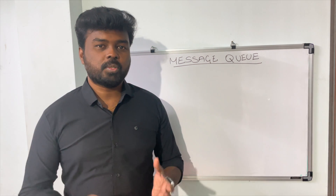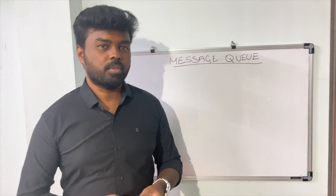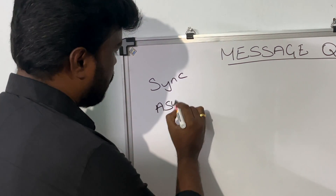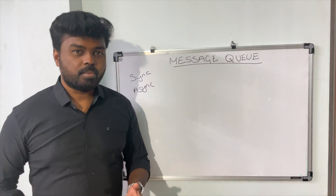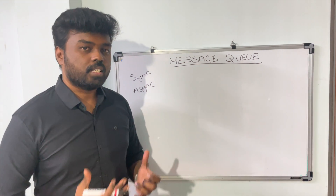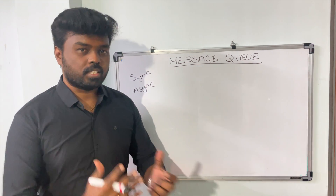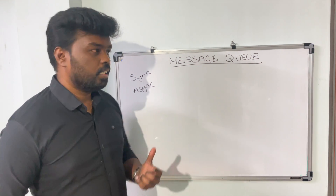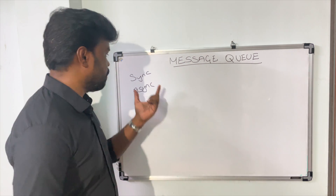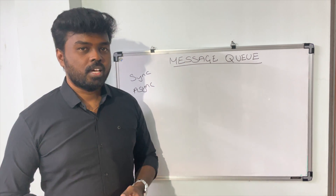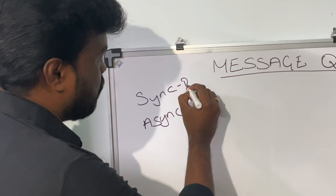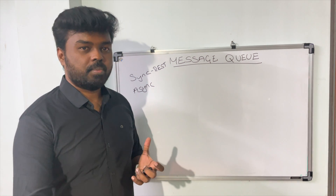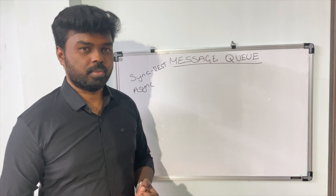Usually when it comes to client-server communication, there are two modes of communication available: one is synchronous and one is asynchronous. In the synchronous way of communication, the client raises a request to the server and then waits for the server to give a response back. The client cannot proceed with any other operations until the server responds. REST is one example of synchronous communication because once you open the HTTP connection, you cannot close it until you get a response from the server.